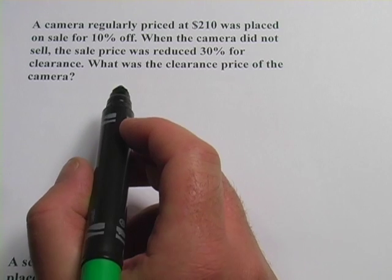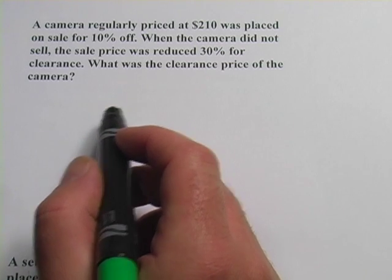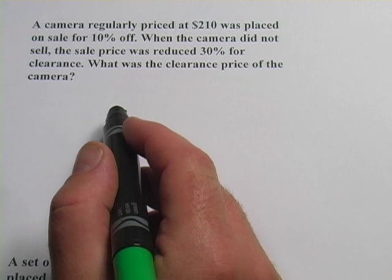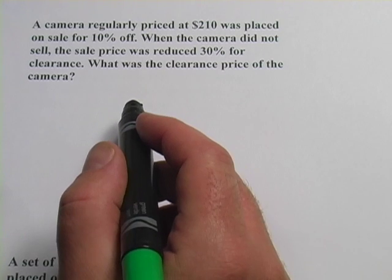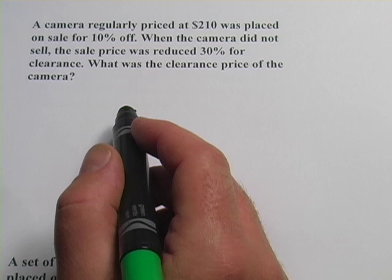These problems are about successive discounts. So when something goes on sale for a certain percent off and then there's another discount put on top of that, how do you figure out what the price is going to be?